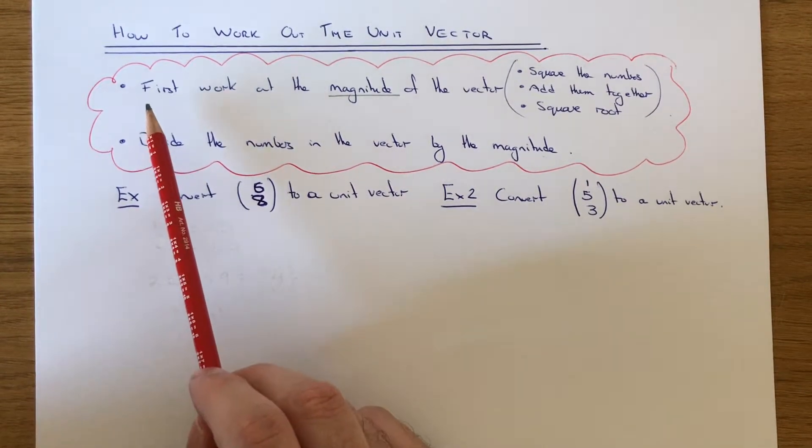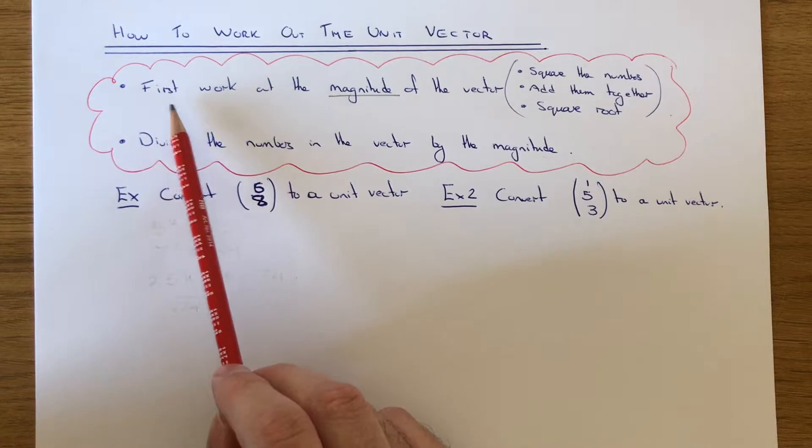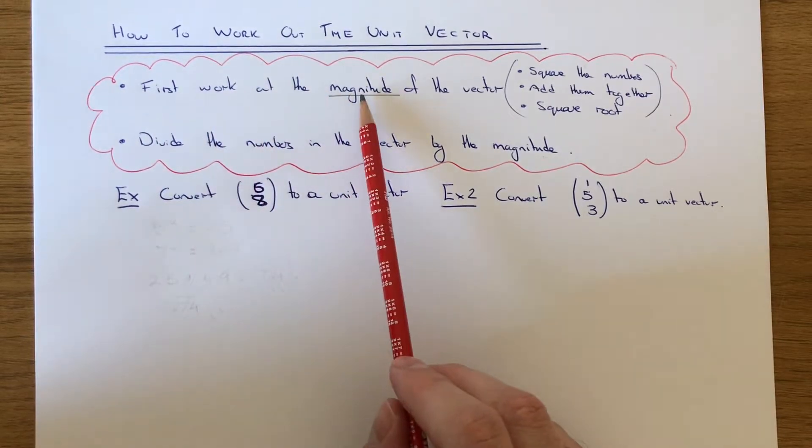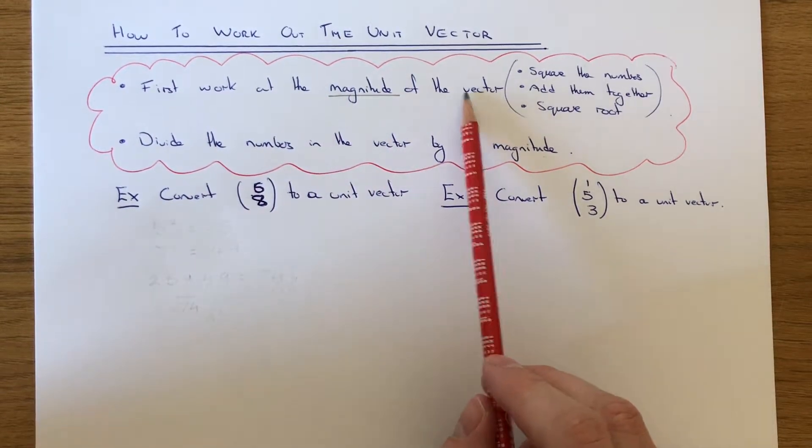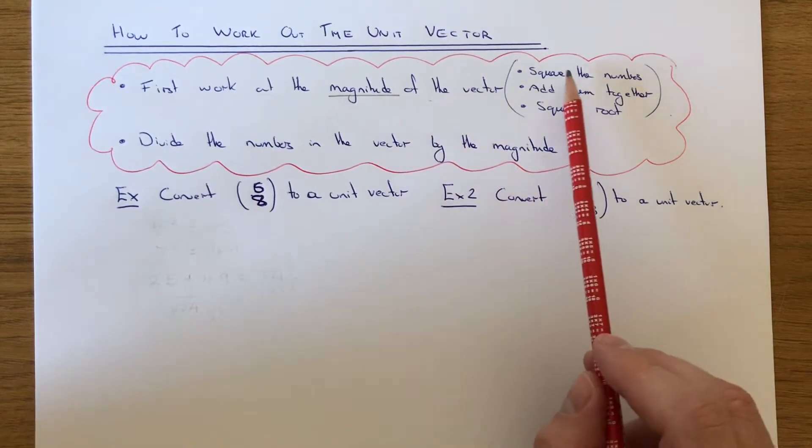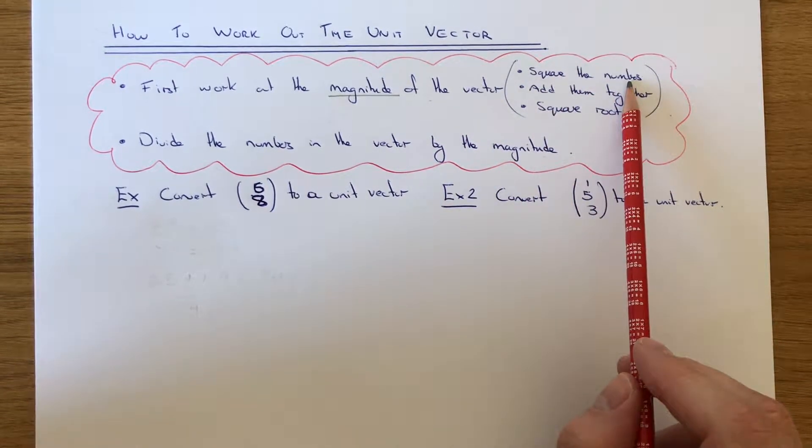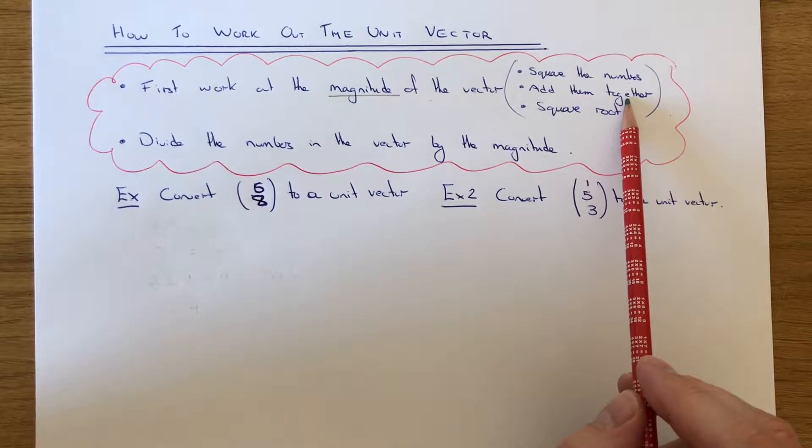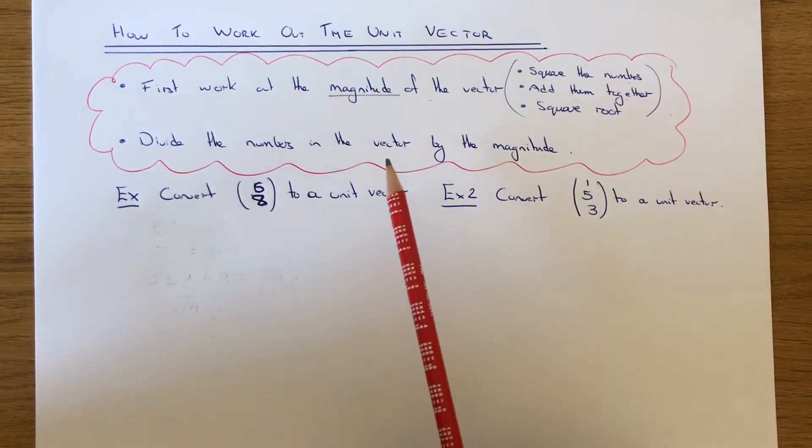The first thing you need to do to find the unit vector is to work out the magnitude of the vector. If you don't know how to do this, a quick way is to just square the numbers in the vector, add them together, and then square root the answer.